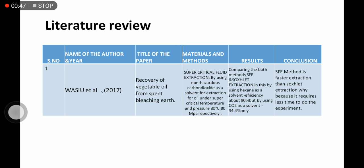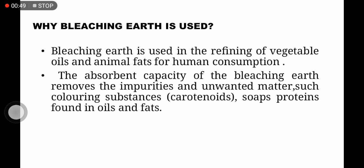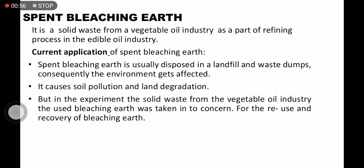Literature review. These are the literature references we referred for this project. Why is bleaching earth used? Bleaching earth is used in refining of vegetable oil and animal fats for human consumption. Spent bleaching earth is a solid waste from the vegetable oil industry as part of the refining process in edible oil industry. Spent bleaching earth is usually disposed in landfills and waste dumps, and consequently the environment gets affected. It causes soil pollution and land degradation.